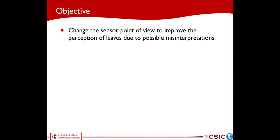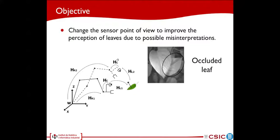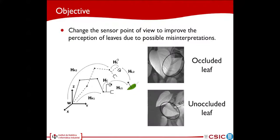The aim of this preliminary work is to improve the perception of plants by changing the sensor's point of view. By doing that, possible misinterpretations in image segmentation can be overcome, as can be seen in the figures on the right side.